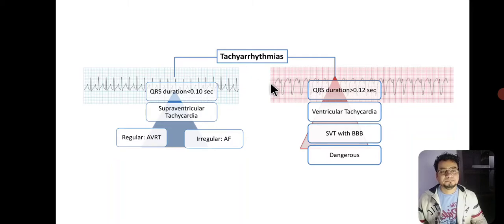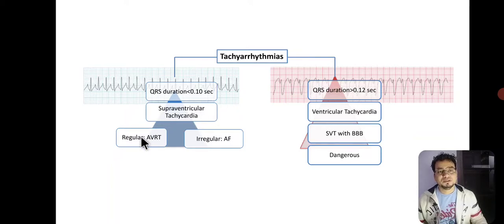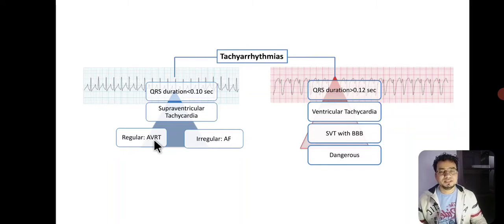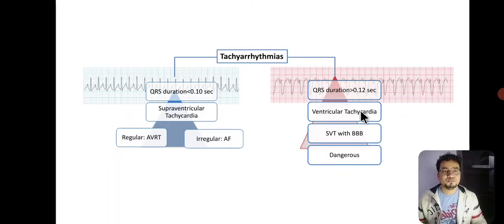The differentiation into these two types of tachyarrhythmia is very important because the treatment is different. In narrow complex tachycardia, the most common is supraventricular tachycardia, which may be regular — known as AVRT (atrio-ventricular re-entrant tachycardia) — or irregular, called atrial fibrillation. Broad complex tachycardia with QRS more than 0.12 second is most commonly ventricular tachycardia, or less commonly SVT with aberrant conduction, usually due to bundle branch block.